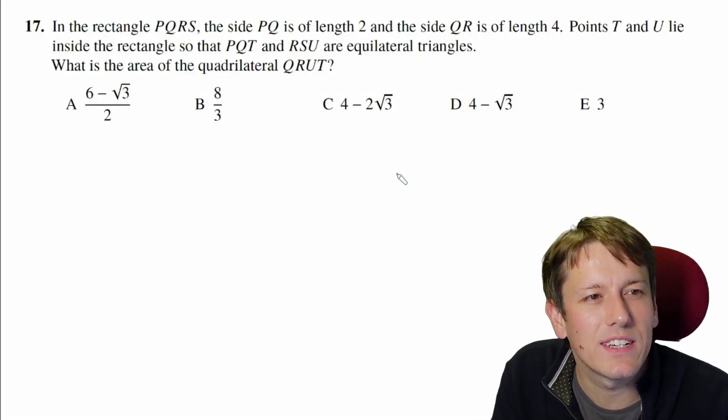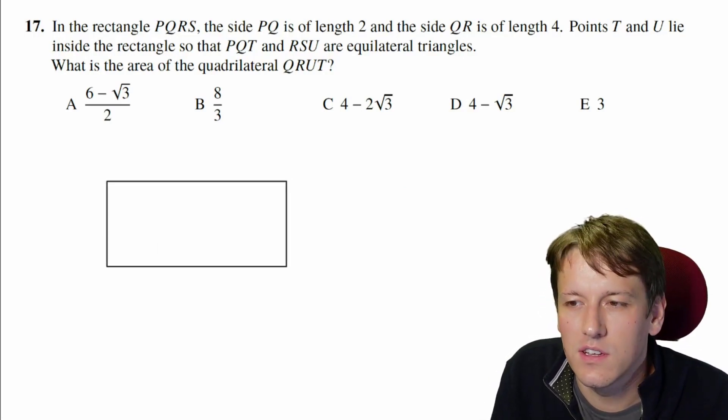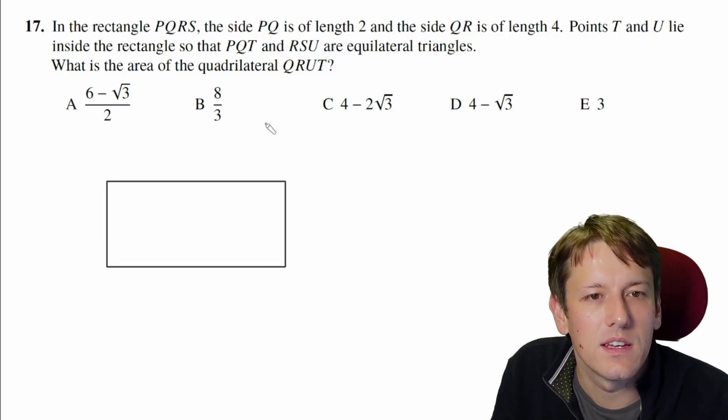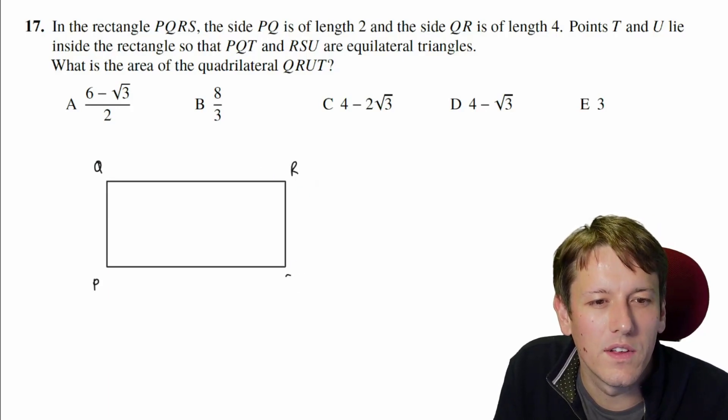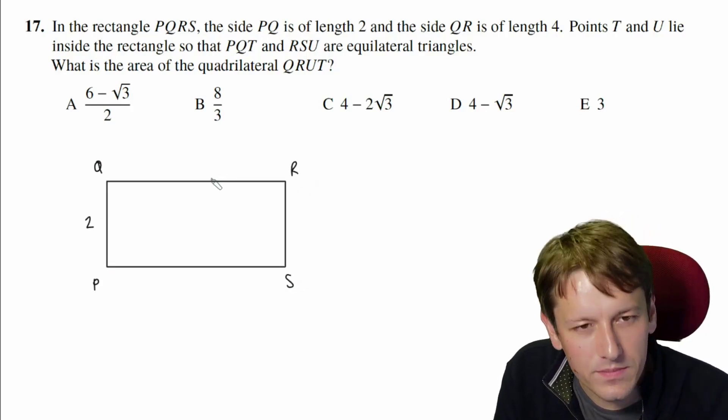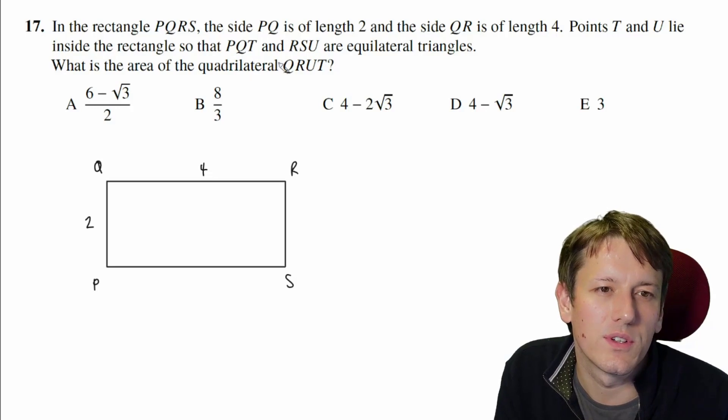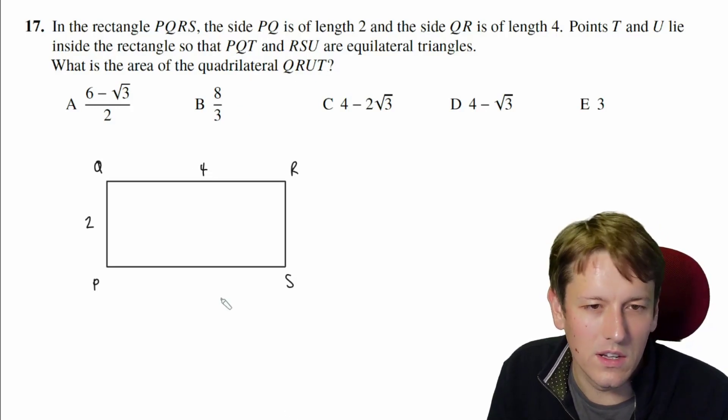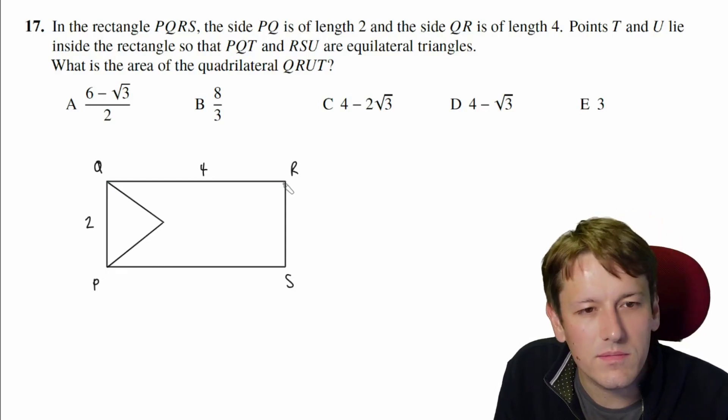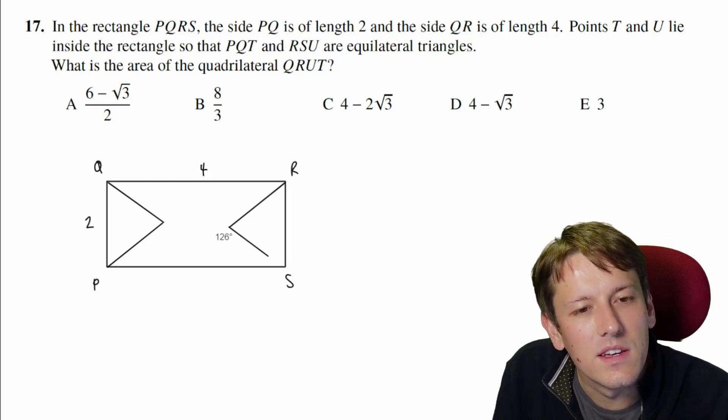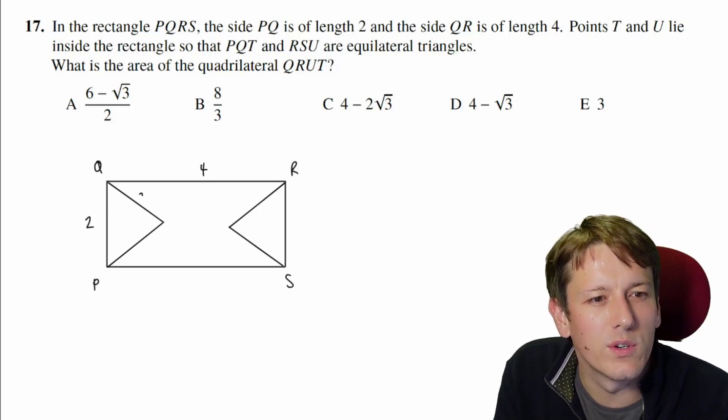In question 17 we've got a rectangle PQRS and we are told things about the side lengths, so I should certainly try to draw a diagram of this. Now, it says PQ is the shorter side, so let's label it like this, PQRS. We always label the sides in order like that. So this side is length 2, this side is length 4, and we've got points T and U inside the rectangle, so that PQT and RSU are equilateral triangles. So we're going to have them coming in something like this. I'm just going to do this approximately, and these aren't going to meet, because this side length is 4 and all of these side lengths are going to be 2.